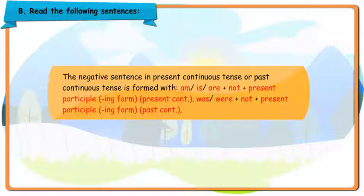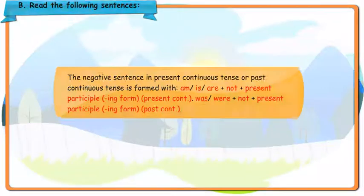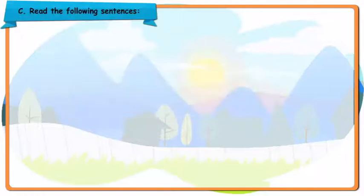The negative sentence in present continuous tense or past continuous tense is formed with: am, is, or are plus not plus present participle (ing form) — present continuous. Was or were plus not plus present participle (ing form) — past continuous.